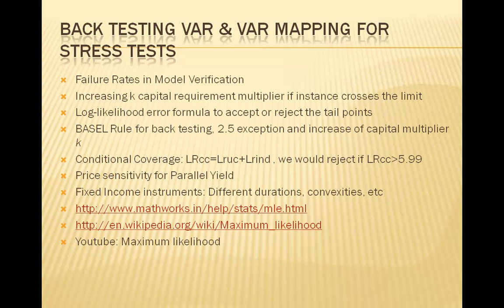Continuing from last time, we are looking at backtesting techniques for Value at Risk. We divided everything into two parts: understanding the QPAC model, which is used to determine accept or reject of tail points. We have the log likelihood ratio based on P, T, and N, where P is the probability of exception equal to 1 minus confidence level, N is total number of exceptions, and T is the number of samples.